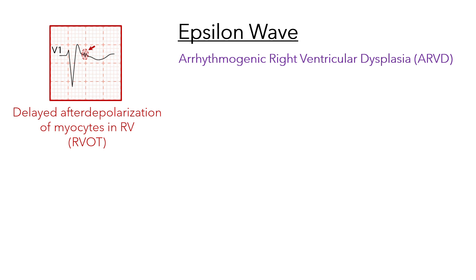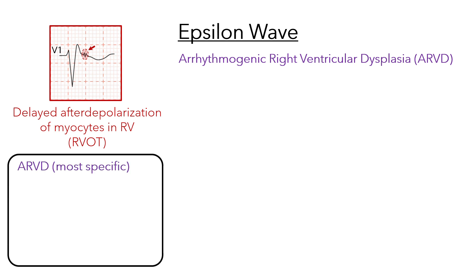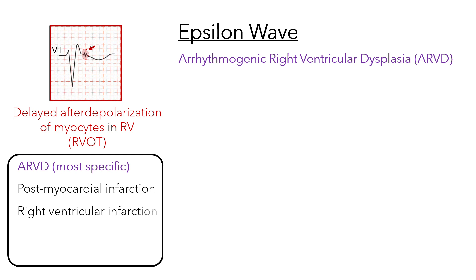Although epsilon waves are the most specific finding in ARVD, they are also described in patients with post-myocardial infarction, right ventricular infarction, infiltrative diseases, or sarcoidosis.